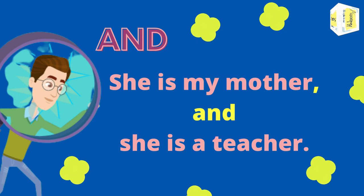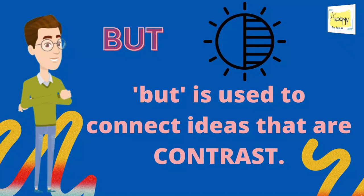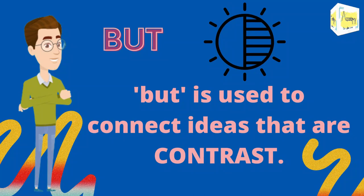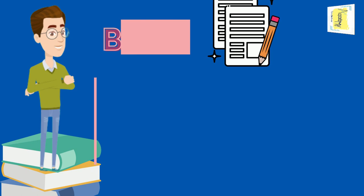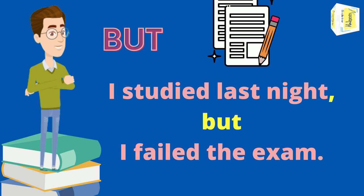Next is conjunction 'but.' 'But' is used to connect ideas that are contrasting. Look at these two sentences: 'I studied last night.' 'I failed the exam.' These two sentences have contrasting ideas, so we can connect them using conjunction 'but': 'I studied last night but I failed the exam.'